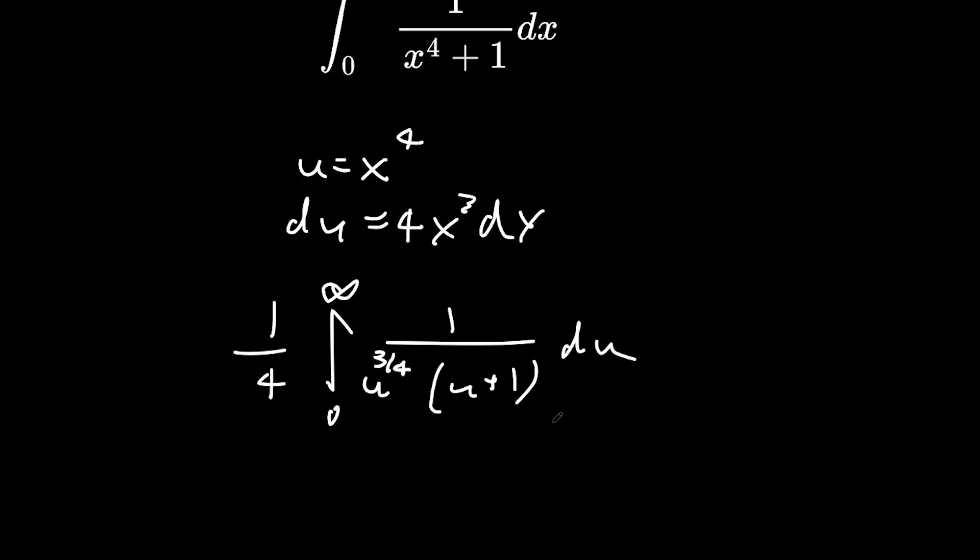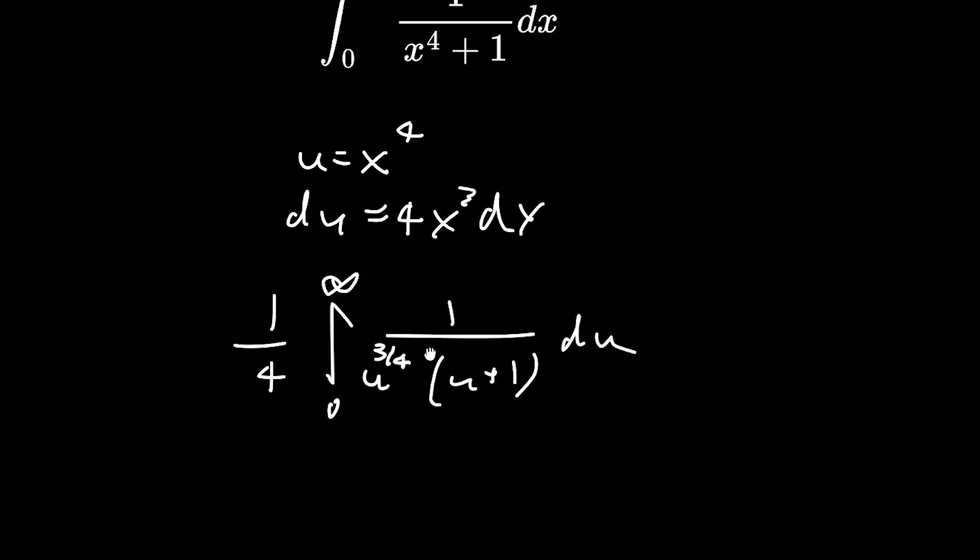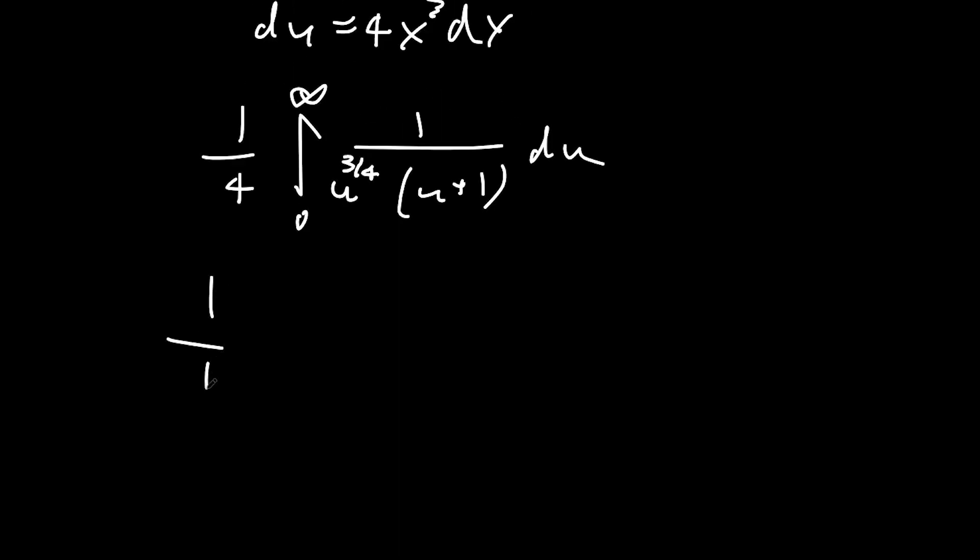And what we're going to do is bring this u to the 3 over 4 to the numerator so we can use the beta function. So we're going to say u, and instead of doing u to the minus 3 quarters, we're going to write u to the power of a quarter minus 1 over u plus 1.